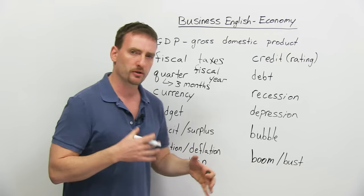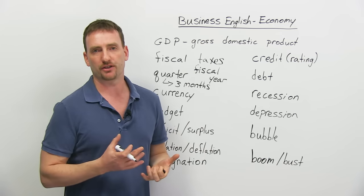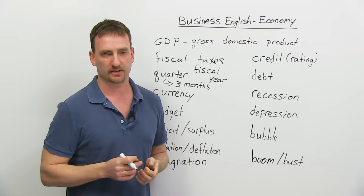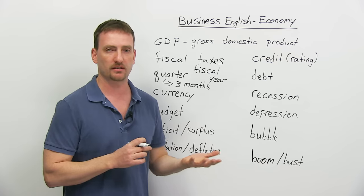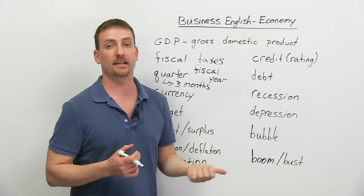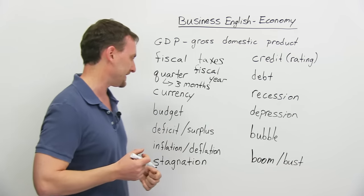Currency. I think everybody knows this word, but just in case, this is the money that is used in a country or a region. This is the monetary value that is used for exchanges, trades, investments. In Canada, we use the Canadian dollar. In the US, they use the American dollar. Euro in Europe, etc.